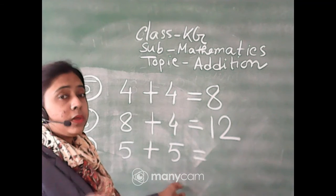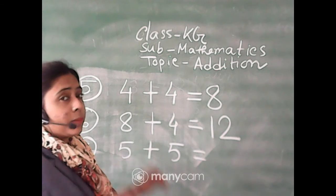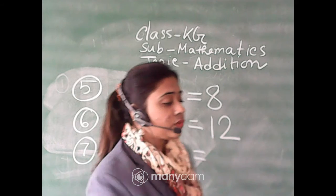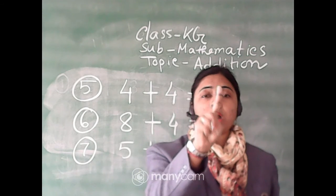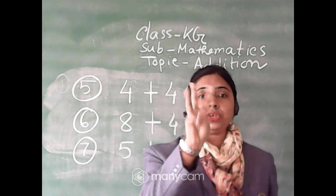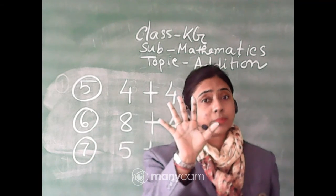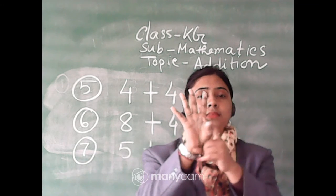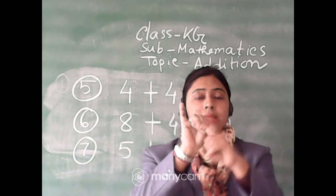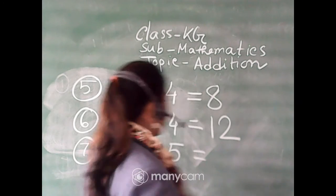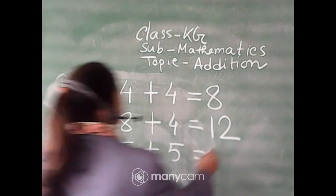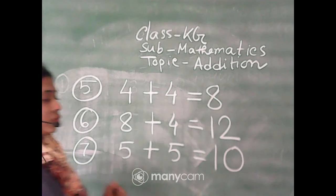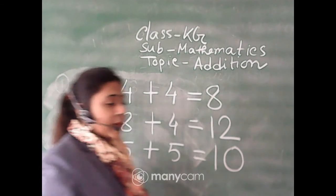The last one: five plus five. Both sides have the same number. So five fingers: one, two, three, four, five, and the other number is also five, so counting on: six, seven, eight, nine, ten. So five plus five is equal to ten. Completed.